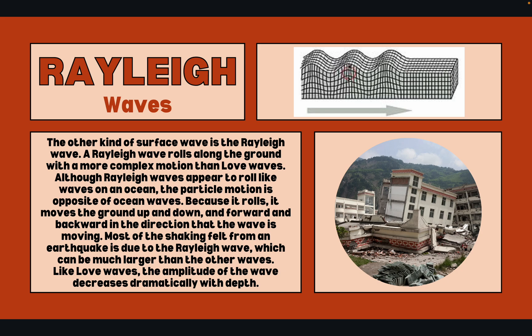Although Rayleigh waves appear to roll like waves on the ocean, the particle motion is opposite to ocean waves. Because it rolls, it moves the ground up and down, and forward and backward in the direction that the wave is moving. Most of the shaking felt from an earthquake is due to a Rayleigh wave, which can be much larger than the other waves.